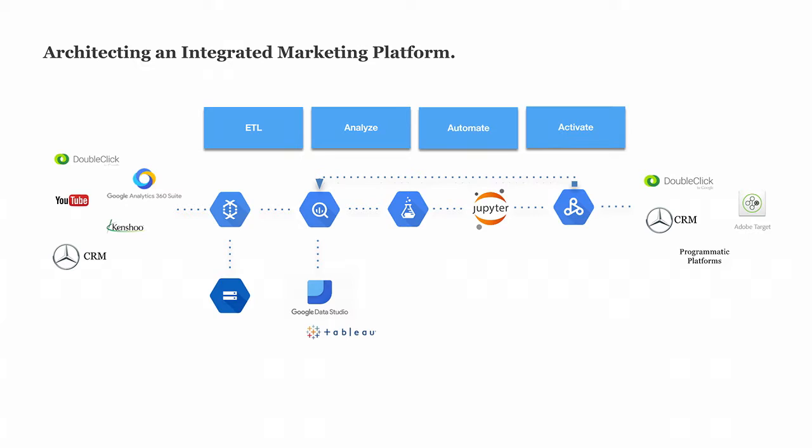Moving toward automation and activation: we've been experimenting with Datalab over the last three to six months, but much of our major development work is done on Jupyter as a platform. We use Dataproc to automate a lot of the modeling code. Modeling outputs are re-ingested back into BigQuery to validate and monitor as a performance mechanism, and we use custom integrations with different platforms to push information out. This entire solution architecture has officially been registered as a partner solution within Google — essentially how we've laid it out for Mercedes.